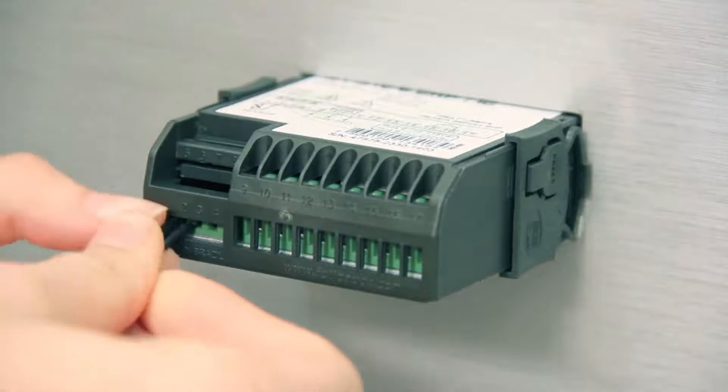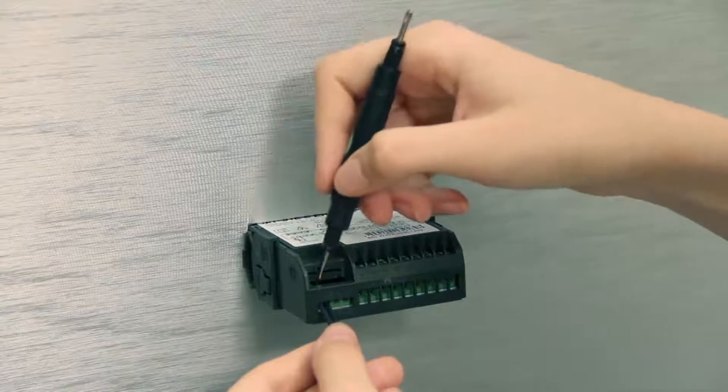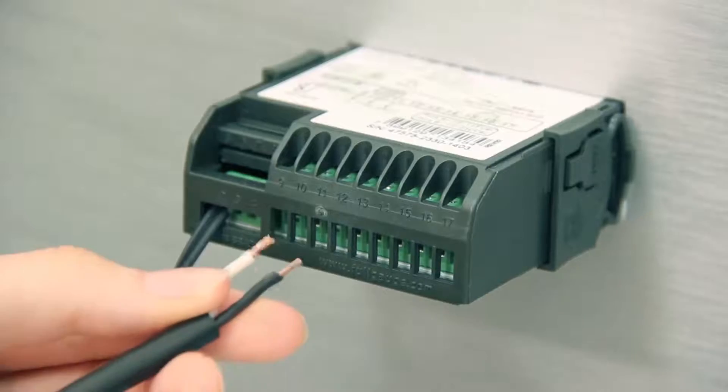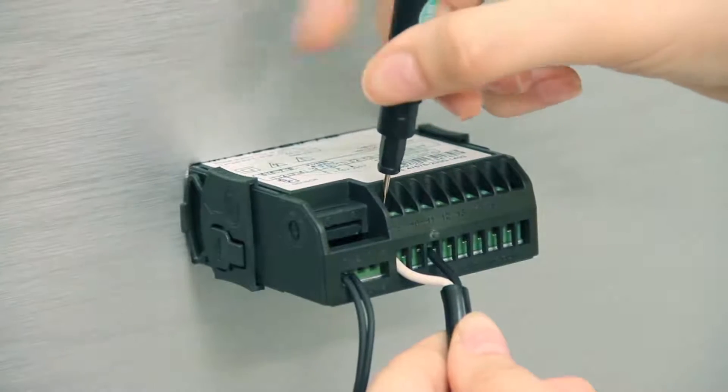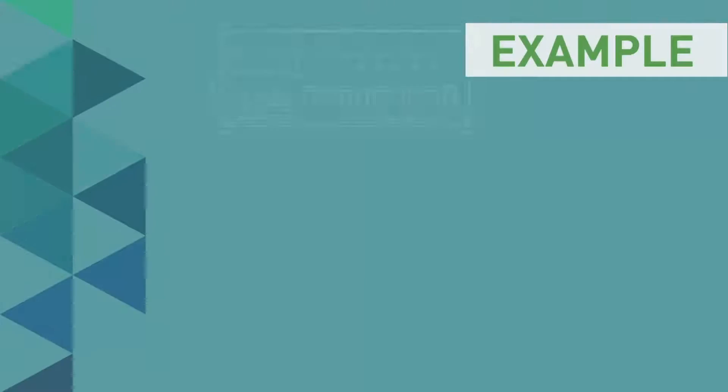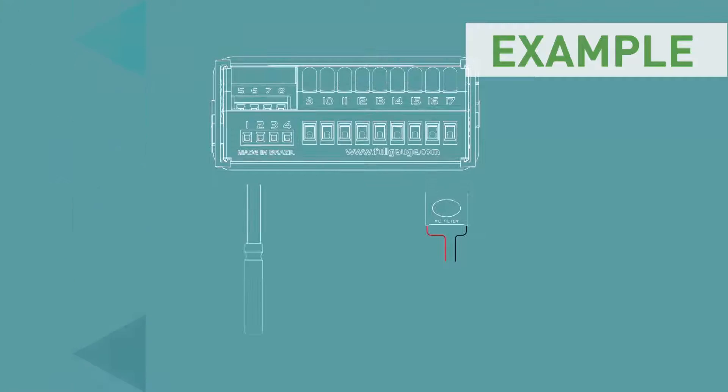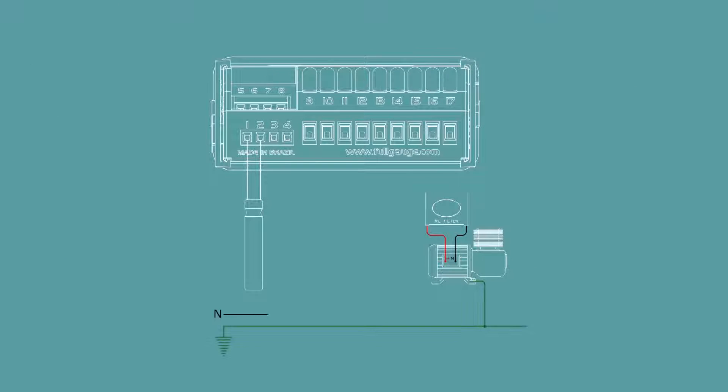We now present two installation examples of the MT512E 2HP. You must configure and install the instrument according to your needs. Cooling installation. Assuming power is less than 2 horsepower, a contact switch is not used. However, the RC filter is used. In this installation example, the supply is made with 127 volts AC.